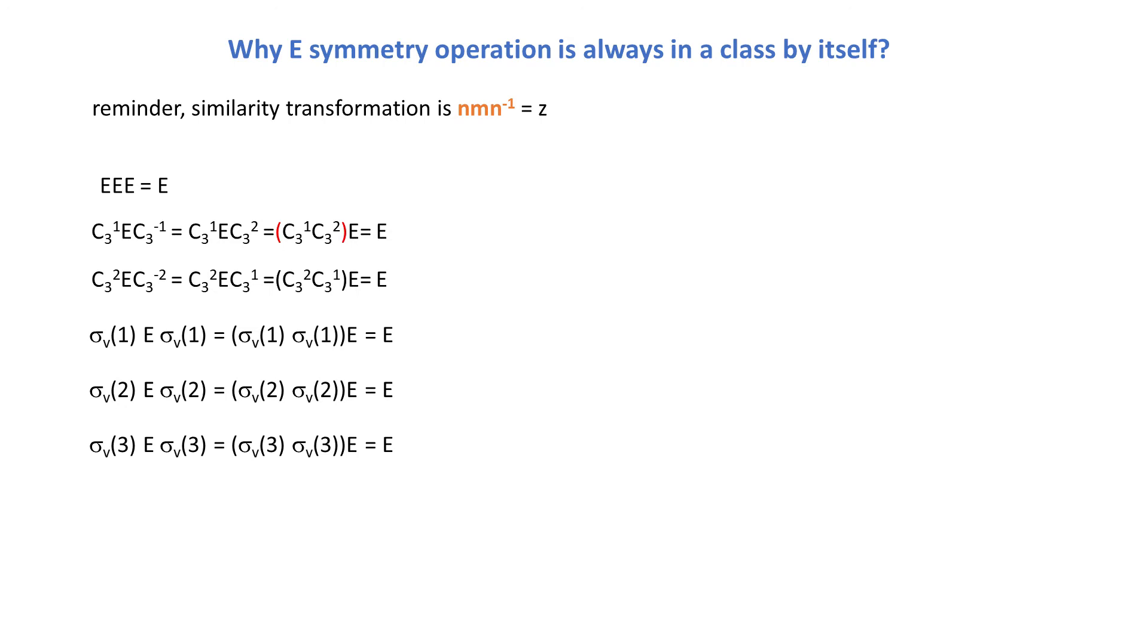Of course there is more than one good way of doing things, we might just go simply from right to left, and we would also be able to show that we end up with E. It's more of a convention to change, for instance, C3-1 to C3-2, so that all the rotations are in the same direction. The third row is very similar.